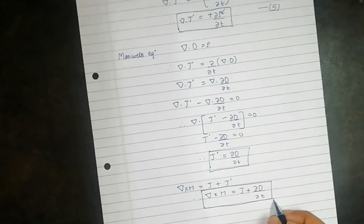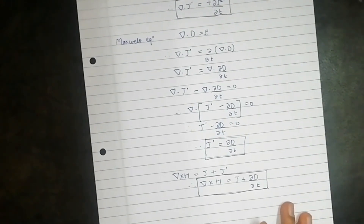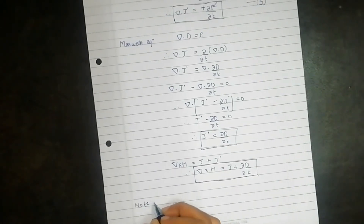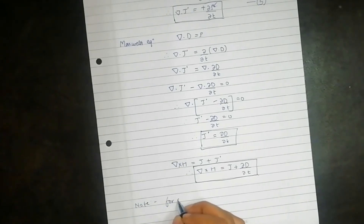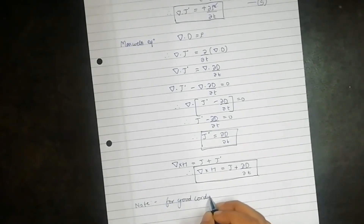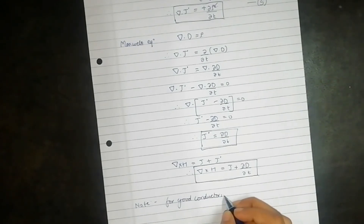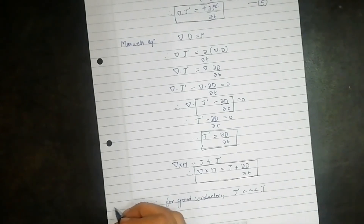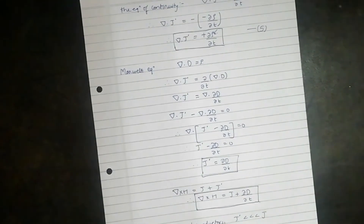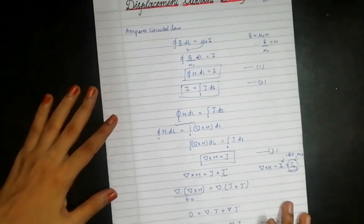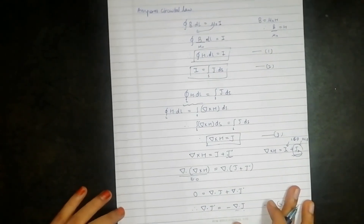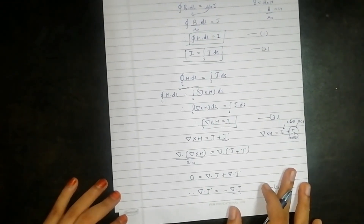This is the final equation, also known as Maxwell's correction to Ampere's law. One thing to remember about J prime is that for good conductors, the value of J prime is very much less than J — this can be asked in MCQs. That was all about the derivation of the displacement current density. I hope you understood the concept; thank you so much for watching till the end and don't forget to like, comment, and subscribe to Solely Science.